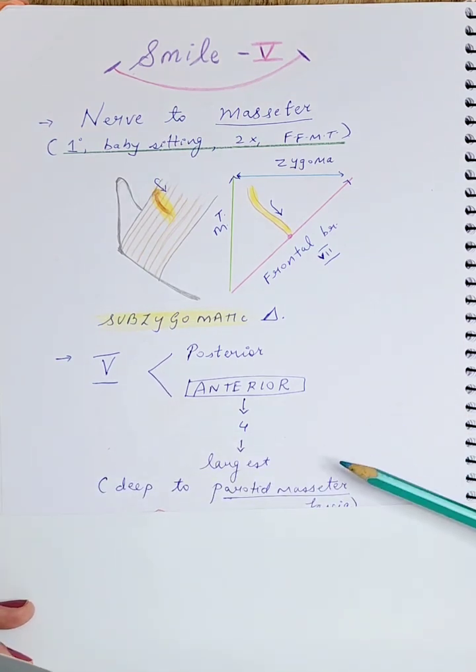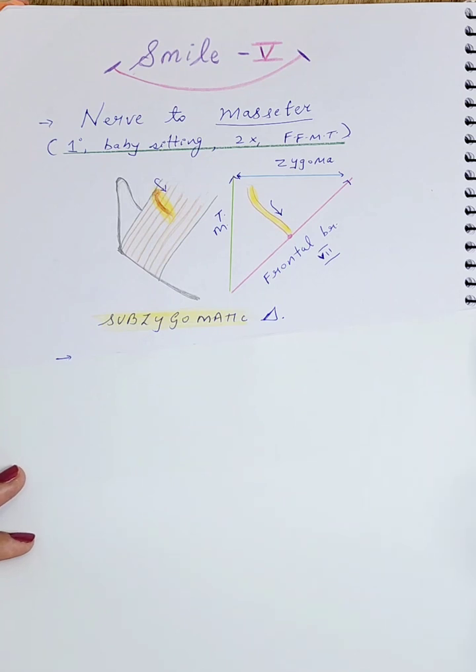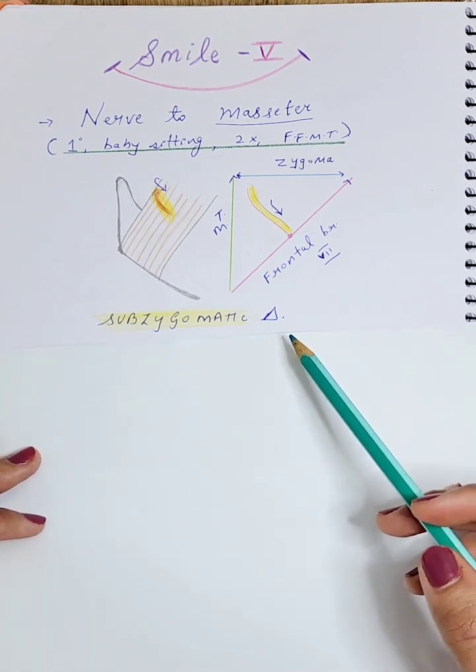Remember that the masseter muscle is a muscle of mastication which helps in chewing movements. This nerve is found deep to the parotid masseteric fascia. You may be asked in your viva where you would find this nerve, because the nerve should travel a very short distance to help re-innervate the muscle.